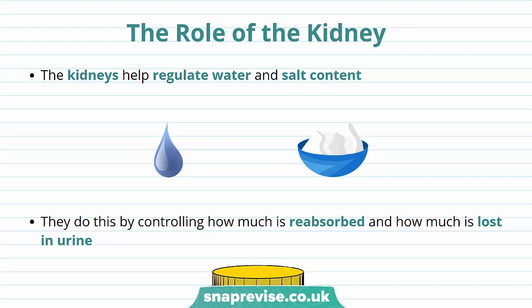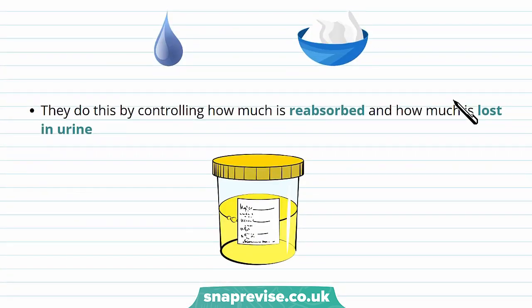The kidneys form part of the urinary system. They take waste products out of the blood and excrete this as urine. They also help regulate water and salt content, meaning they can help control blood water levels by controlling how much is reabsorbed and how much water is lost in urine.